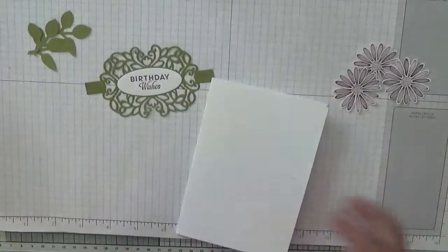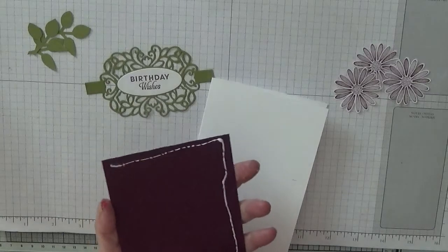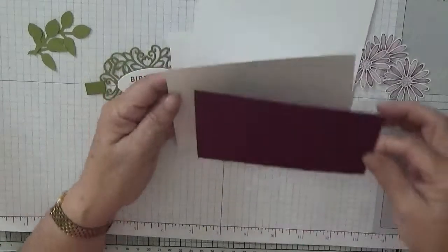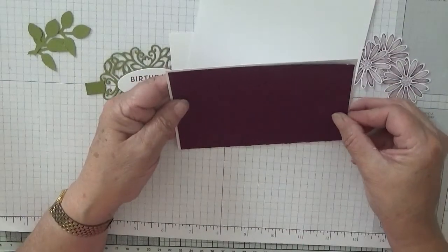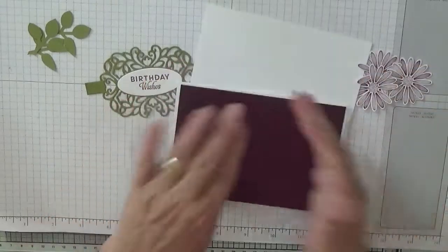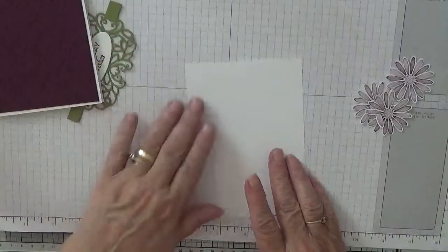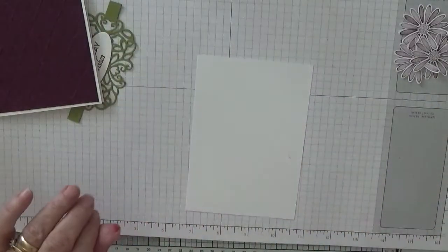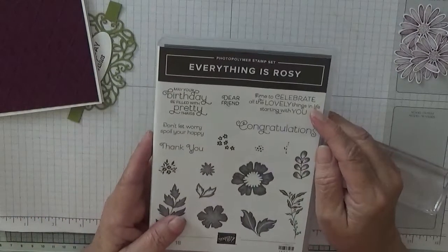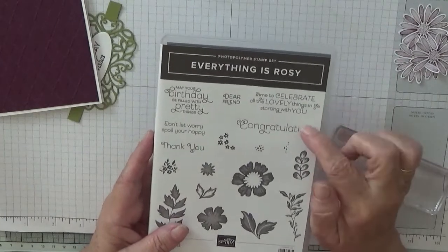And we just need to stick it together. This is one quick card. Oh, I'll tell you what we haven't done. Stick this down. We'll do it in a minute. And stamp the inside of our card. And I have got the sentiment from Everything is Rosy and I've got Time to Celebrate All the Lovely Things in Life Starting With You.